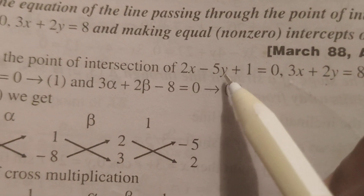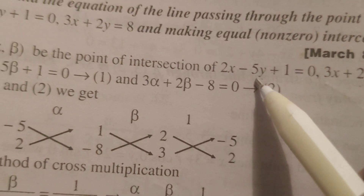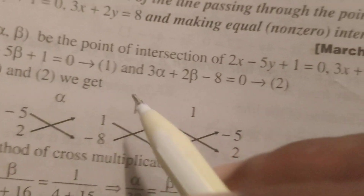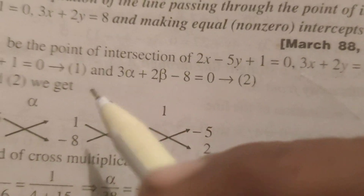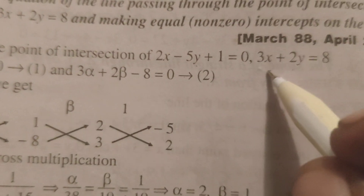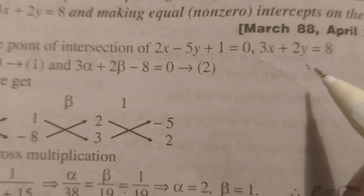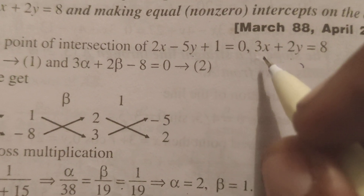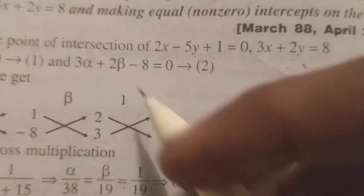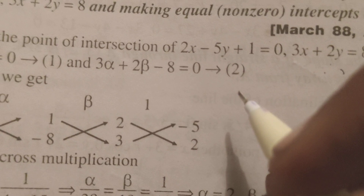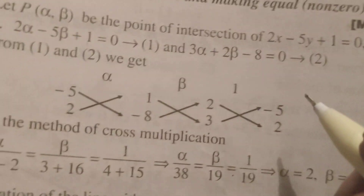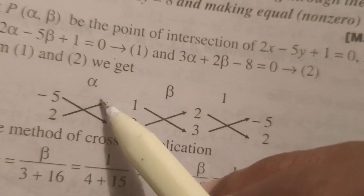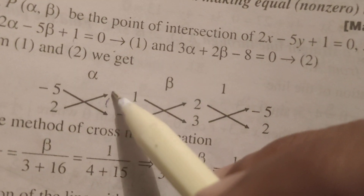So we get: 2 alpha minus 5 beta plus 1 equals to 0 — consider equation number 1. And 3 alpha plus 2 beta equals to 8, which we can also write as 3 alpha plus 2 beta minus 8 equals to 0 — consider equation number 2. From equations 1 and 2, here we find out the intersecting point.